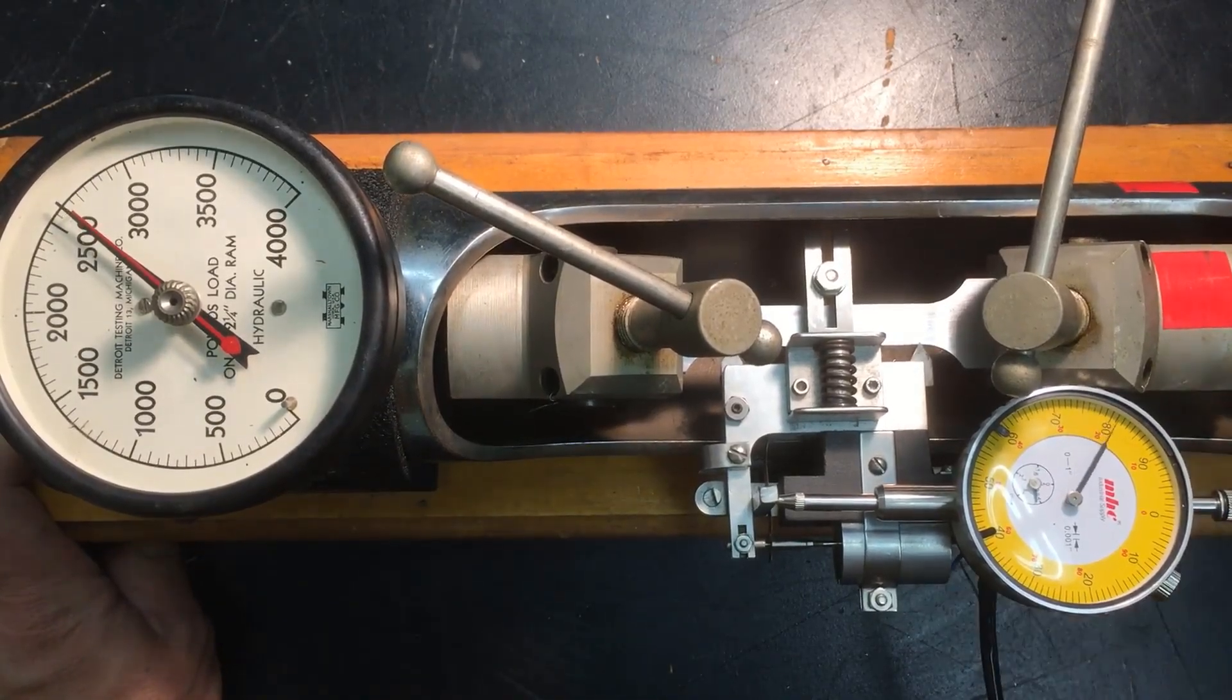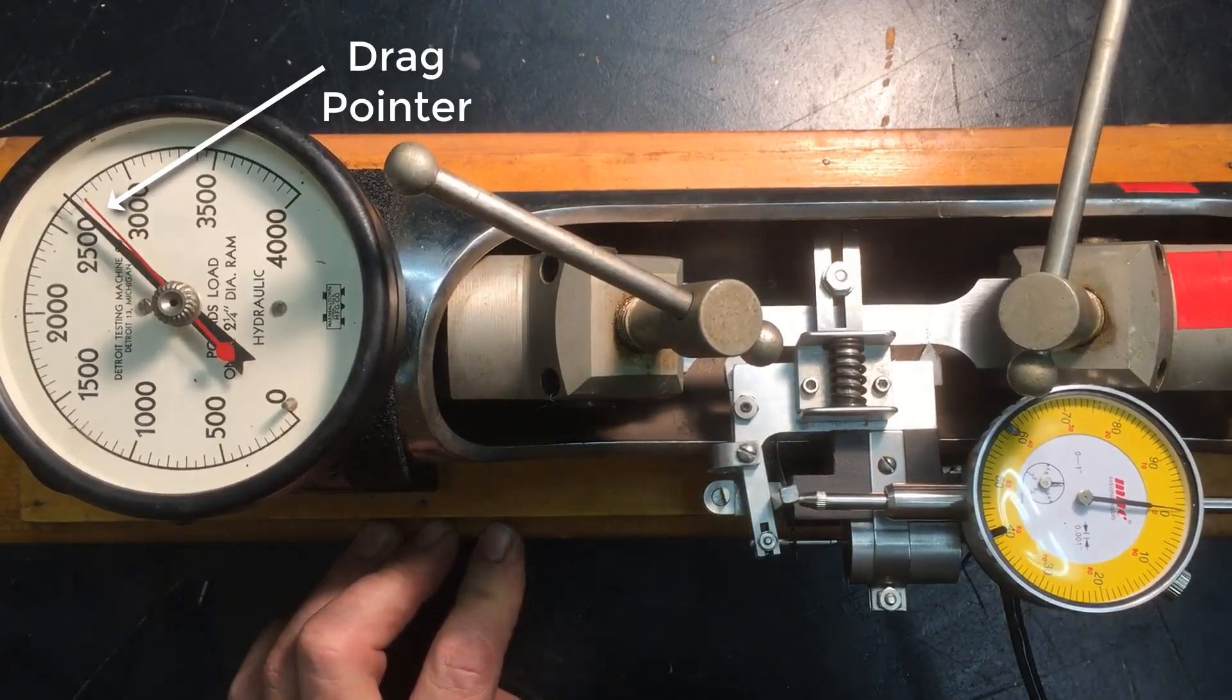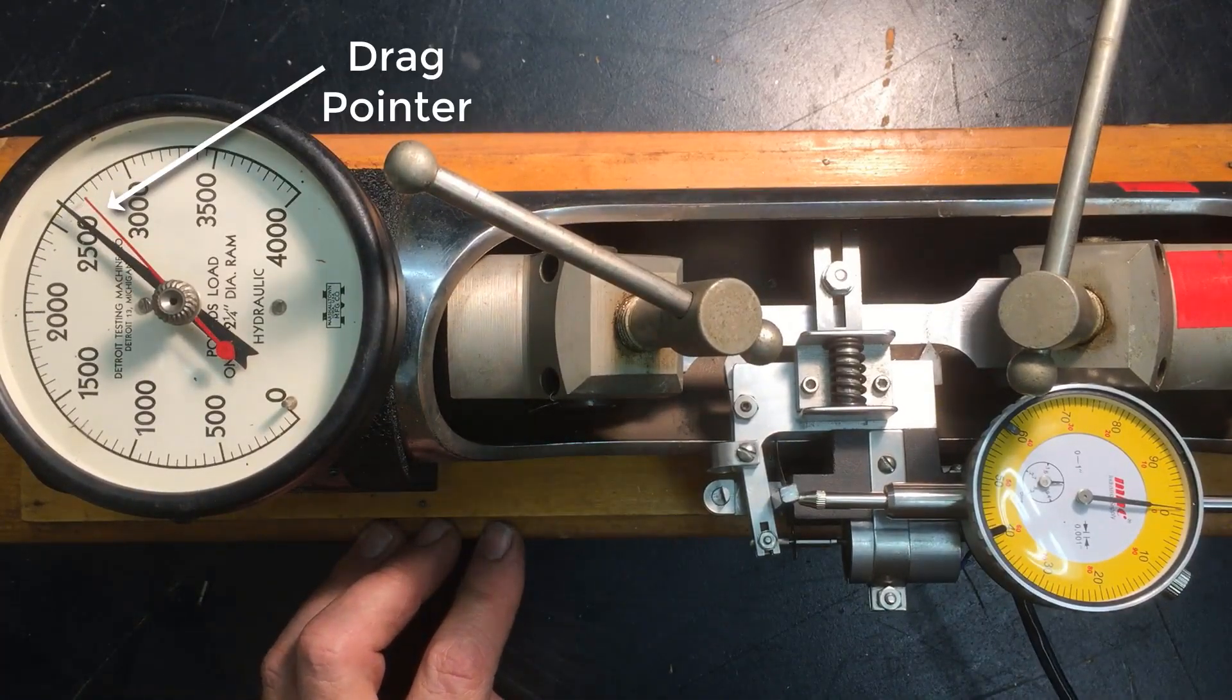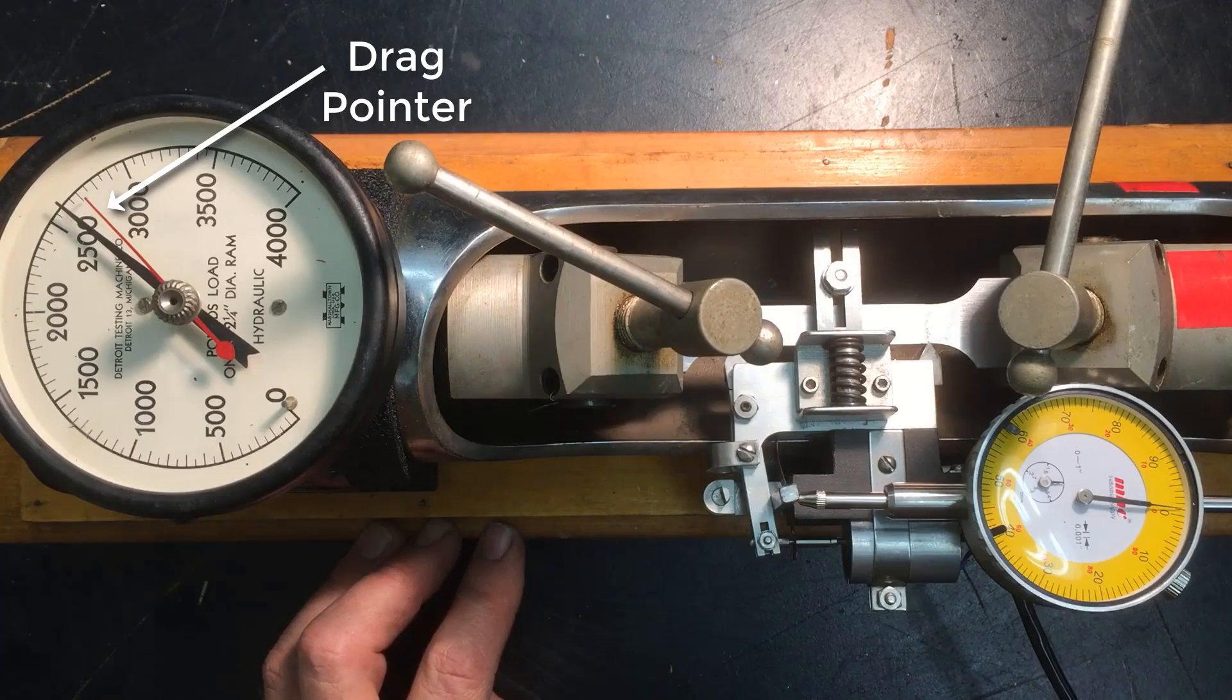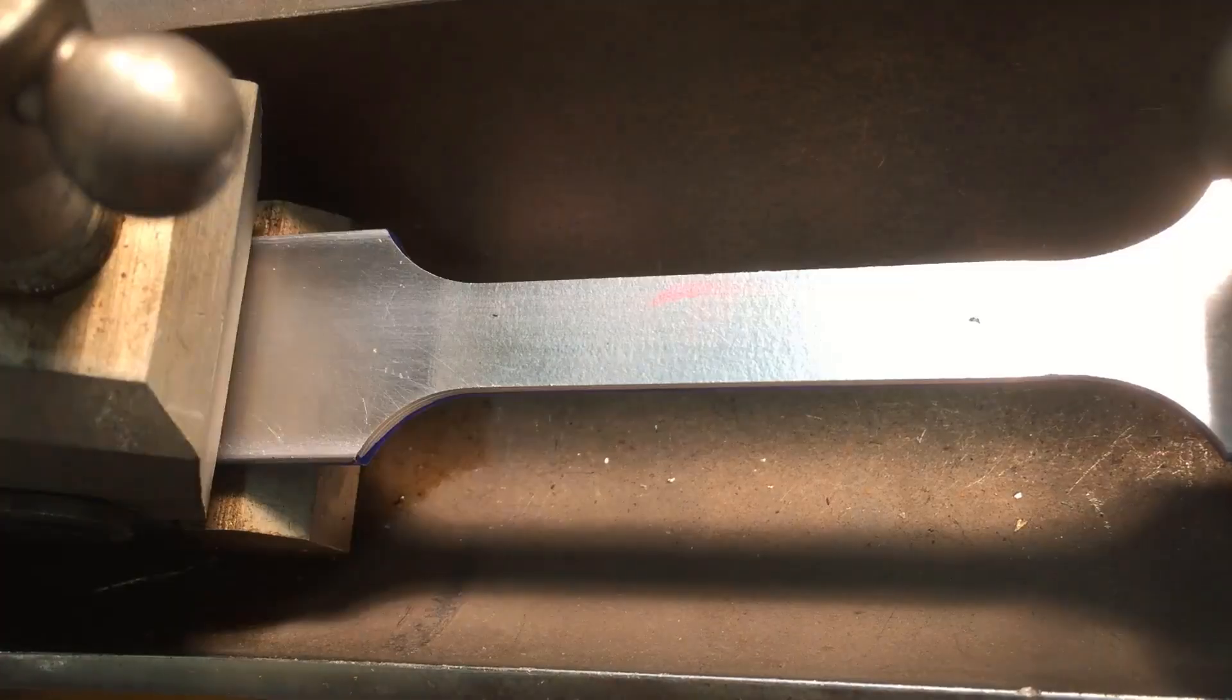Eventually the dial on the force gauge drops down a little bit. This red drag pointer shows where the force reached its maximum. This drop tells me the sample is about to break so I'll remove the extensometer so it won't get damaged. As I keep cranking I can see the sample start to neck down and it breaks.